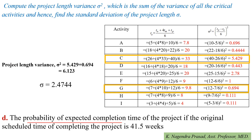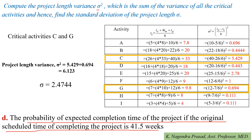Next, we determine the probability of expected completion time if the original scheduled time is 41.5 weeks. First, we calculate the project length variance sigma², which is the sum of variances of all critical activities C and G. Sigma² = 5.429 + 0.694 = 6.123. The standard deviation sigma = 2.4744.